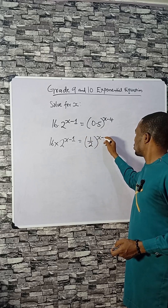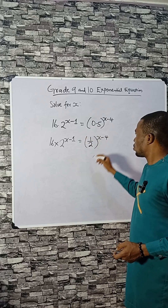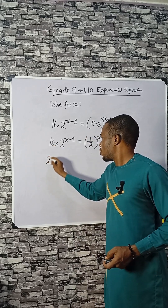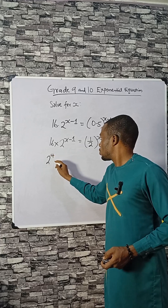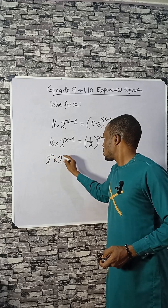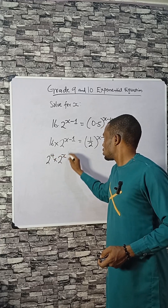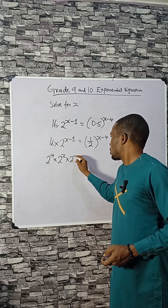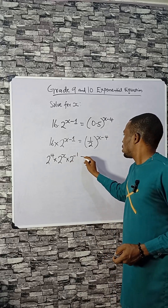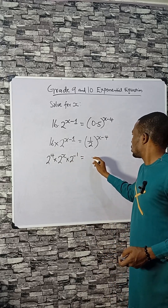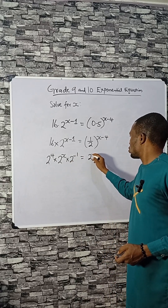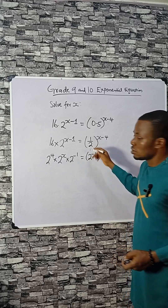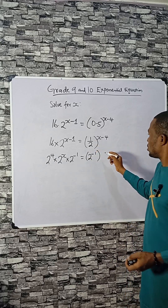0.5 raised to the power of x minus 4, and 16 is 2 raised to the power of 4. We can split the expression. The inverse of 0.5 gives us something in the form of indices — 2 to the minus 1.